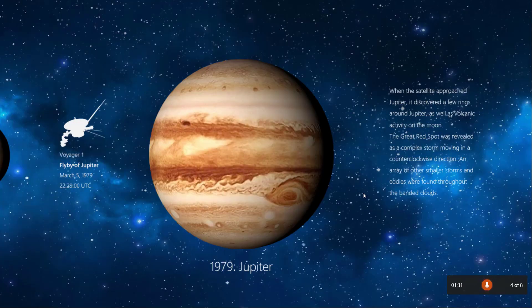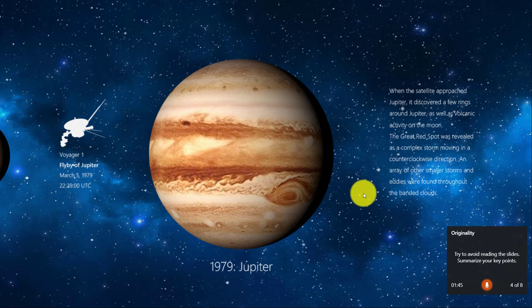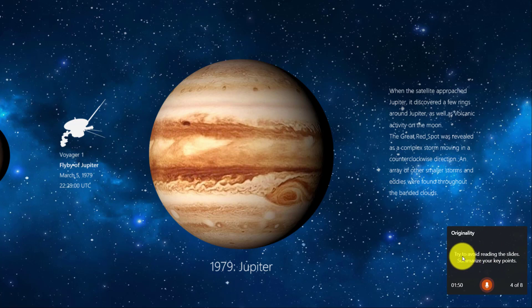Reading from slides is very common for students and for adults, so PowerPoint can listen and see if I'm reading from the slide. So here I go: when the satellite approached Jupiter, it discovered a few rings around Jupiter as well as volcanic activity. Listen to this — originality: try to avoid reading the slides, summarize your key points.